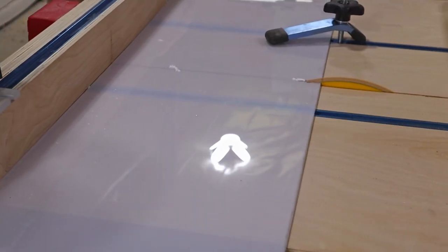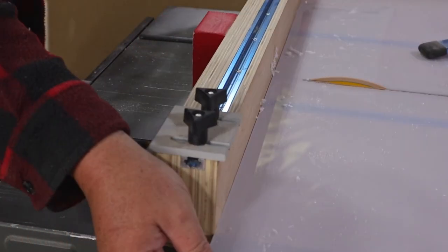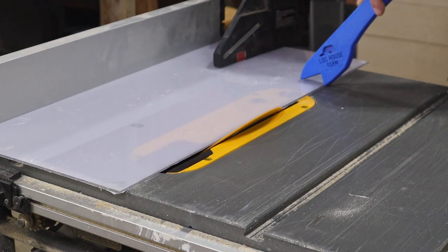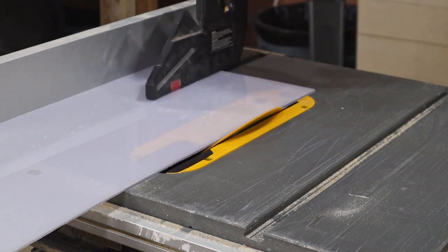The front of the filament box will be made from plexiglass so that I can see what filament I have available. This is cut on the table saw and I set the blade to 45 degrees so that the edges line up well with the rest of the box.